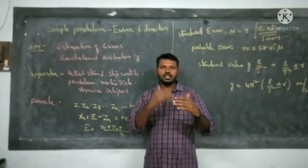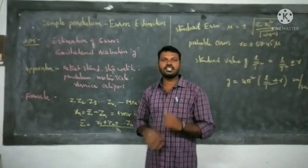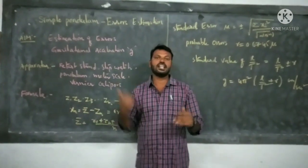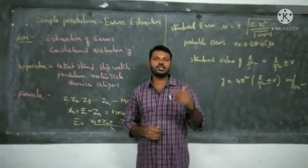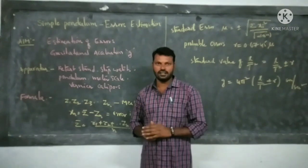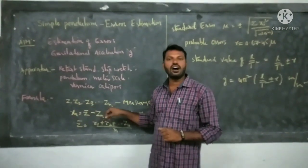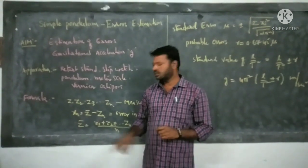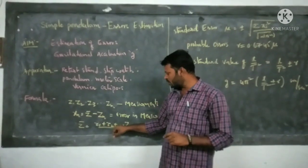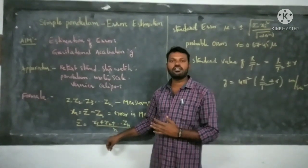How to calculate errors: first, take a number of readings or measurements. These measurements are denoted Z1, Z2, Z3, Z4, up to Zn. Next, take the average of all the measurements — Z bar. Z bar is equal to Z1 plus Z2 plus Z3 plus Zn, divided by the total number of readings n. This is the average value, Z bar.